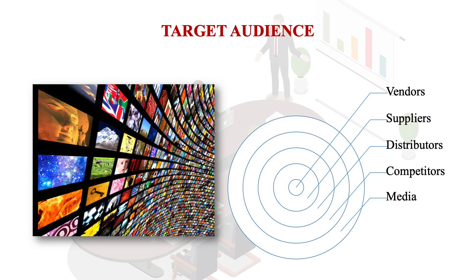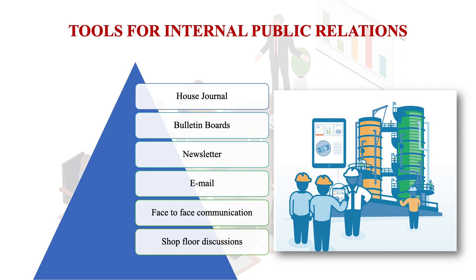Target publics are the intended publics which are going to affect a corporate house, a celebrity, or a political party, directly or indirectly. Maintaining a level of mutual understanding with target publics is necessary for the smooth functioning of corporate houses or government. To reach out to publics, different methods or tools are used for public relations. For example, a news story in a newspaper or a film about an NGO can be used to publicize events and goals.